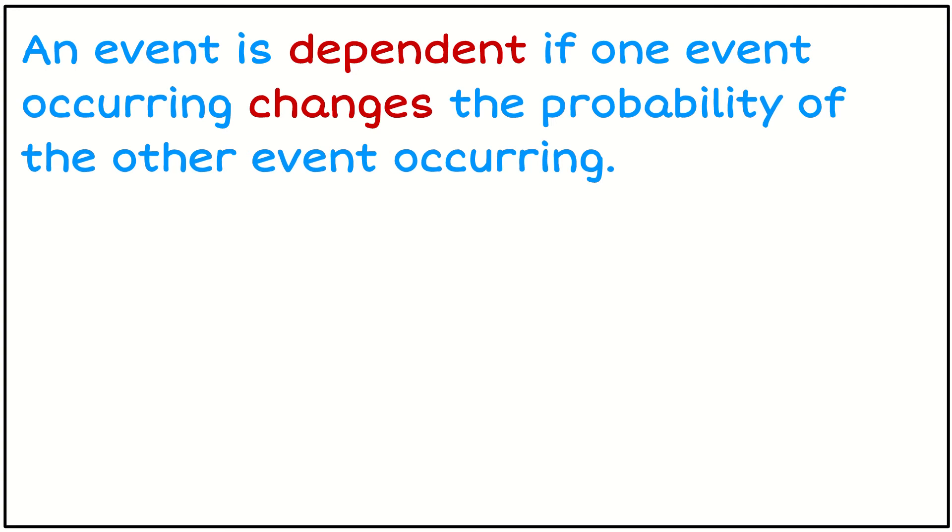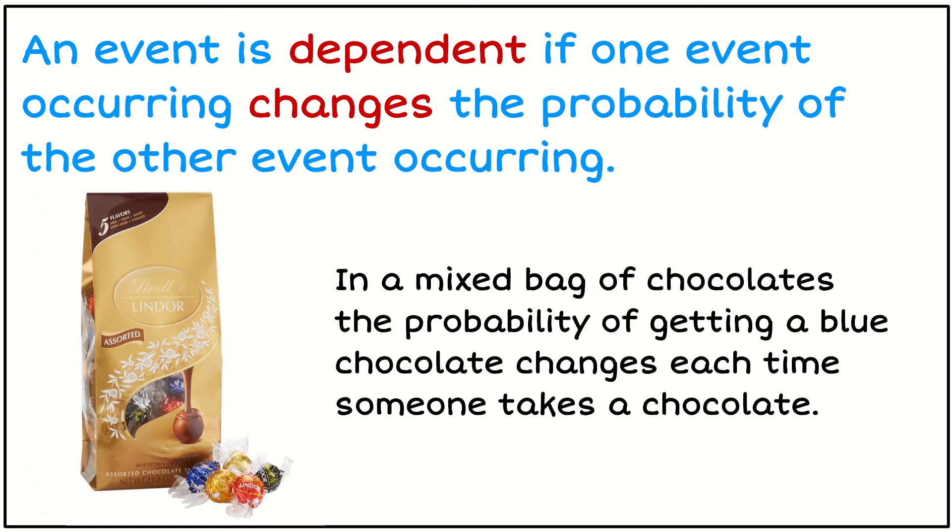If it's dependent, that means that the probability changes if I know whether or not something else has happened. So an example of this, if I've got a mixed bag of chocolate, then the probability of getting a blue chocolate changes every time somebody else takes a chocolate out of this bag. So every time the chocolate is removed, my probability of getting a blue changes. Therefore this would be a dependent situation. It's not independent.